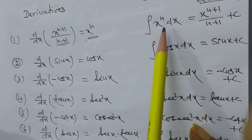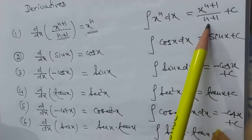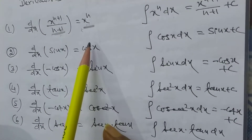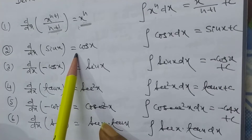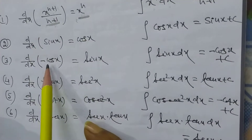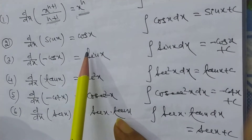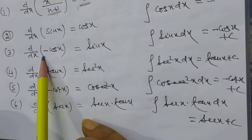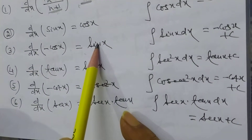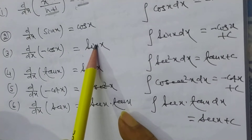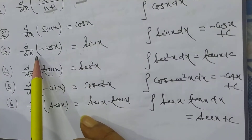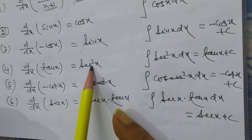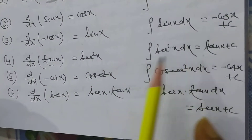The integration of x^n dx equals x^(n+1)/(n+1) + c, because the differentiation of x^(n+1)/(n+1) is x^n. Also, d/dx of (−cos x) equals sin x, so the integration of sin x dx is −cos x + c. And d/dx of tan x equals sec²x, so integration of sec²x is tan x.